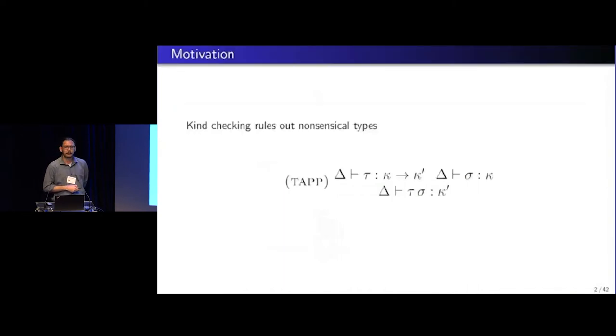So while I'm thanking people, we should also thank this rule for making sure that nonsensical types are out of the system when programmers write it. It's a very simple rule that was formalized by Mark Jones about 30 years ago, who was inspired by generalized type systems.